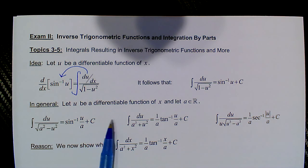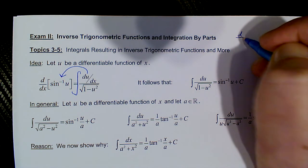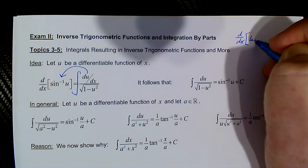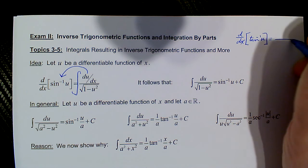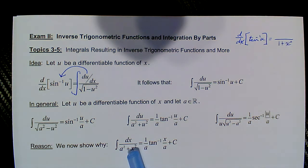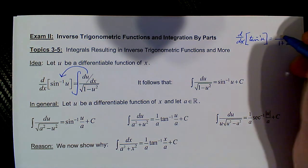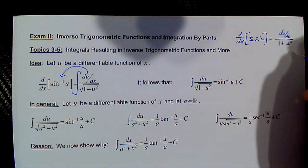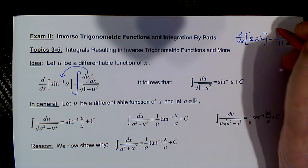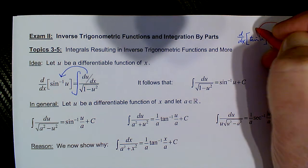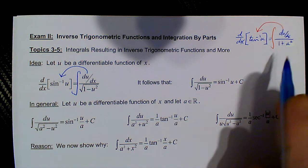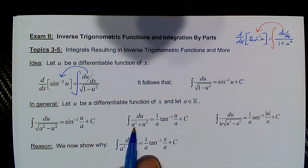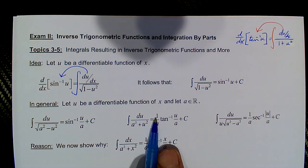Similar formulas exist for the tangent. The derivative of the inverse tangent of u is du/dx over 1 plus u squared. So if we reverse that process and integrate something of that form, it brings us back to the inverse tangent. In the general case where instead of 1 we have a squared, we'll show that it gets modified — not only is the argument divided by a, but the coefficient gets multiplied by 1 over a.